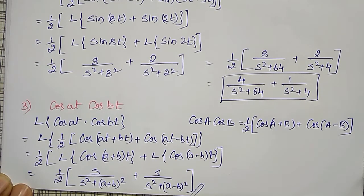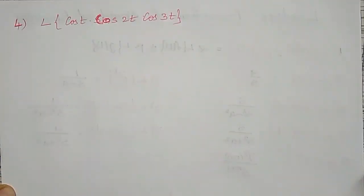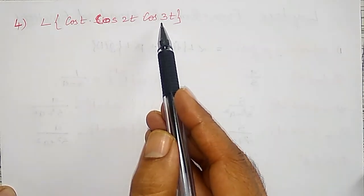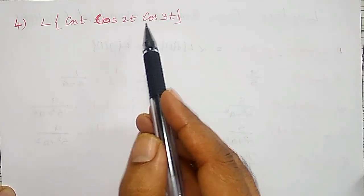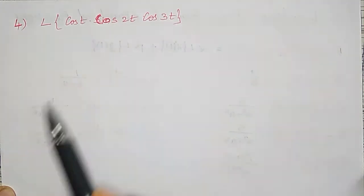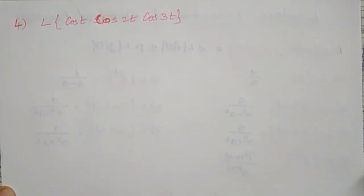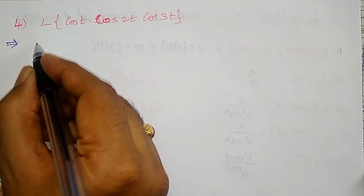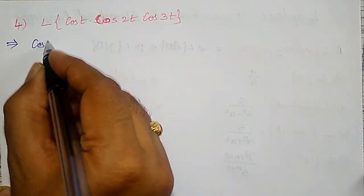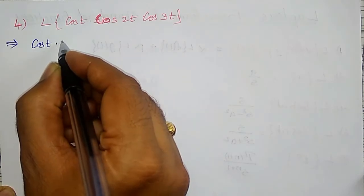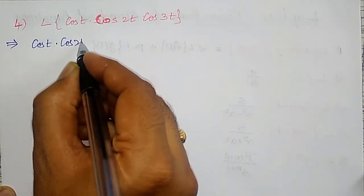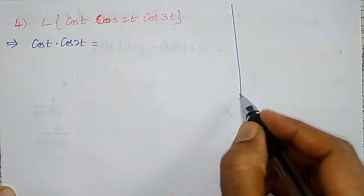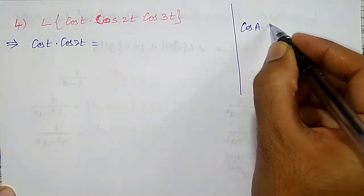Next example: find the Laplace transform of the product of three terms — cos(t)·cos(2t)·cos(3t). The approach is to first convert the product of trigonometric terms into a sum, then apply the Laplace transform. Let me first handle cos(t)·cos(2t) using the product-to-sum formula.